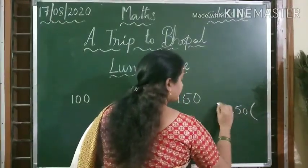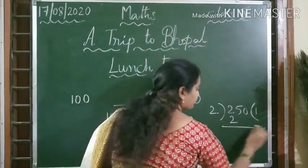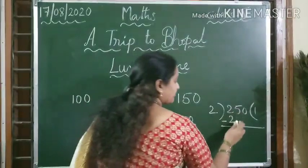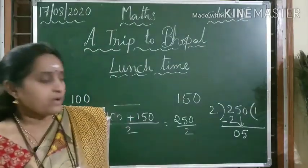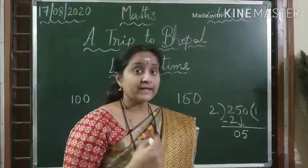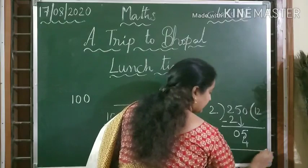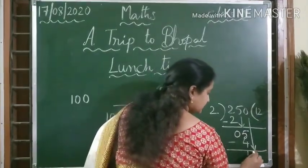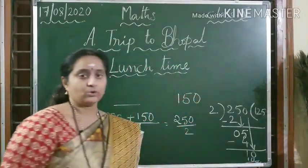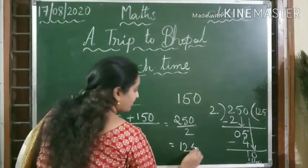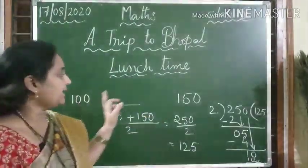Divide 250 by 2. First digit is 2 — 2 ones are 2. Division is nothing but repeated subtraction. 2 minus 2, we get 0. Get down the next digit: 5. In the 2 times table, can we get 5? No. But we can get 4, which is less than 5. So 2 twos are 4. Subtract: 5 minus 4 is 1. Get down the next digit — 2 fives are 10, so the remainder is 0. The answer is 125. So 125 comes exactly between 100 and 150.